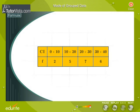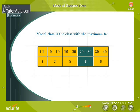When we have grouped data, the mode is found by locating the modal class. The mode is a value inside the modal class. Modal class is the class with the maximum frequency.